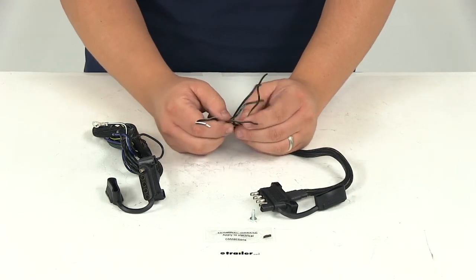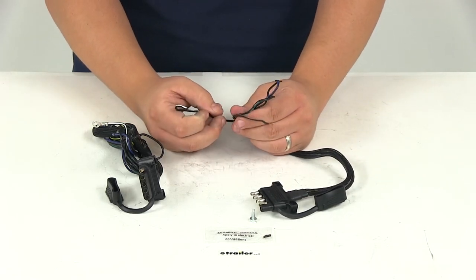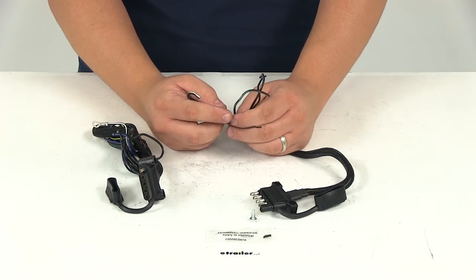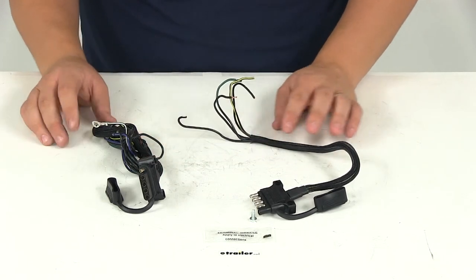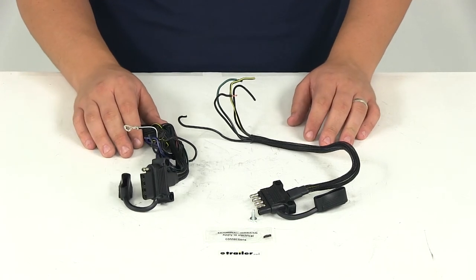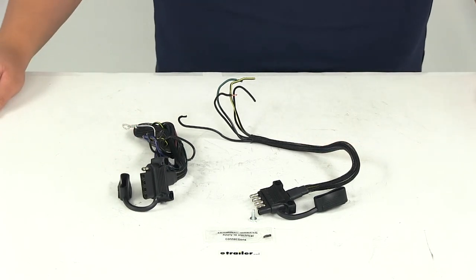They are color-coded: white is your ground, brown is your parking lights or taillights, yellow is for your left turn, green is for your right turn, and blue is for your back up or reverse.